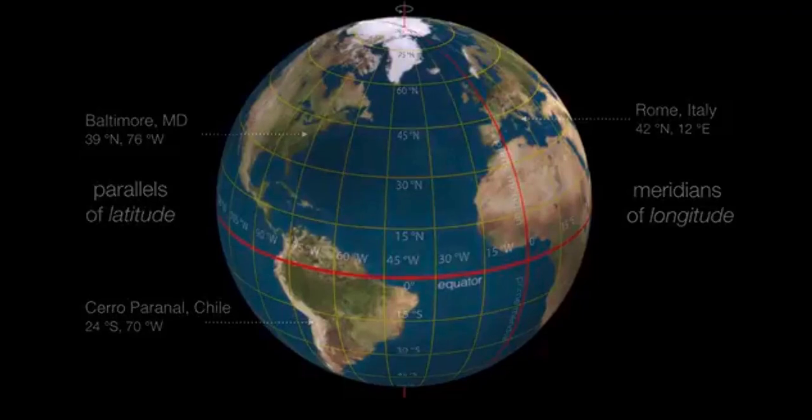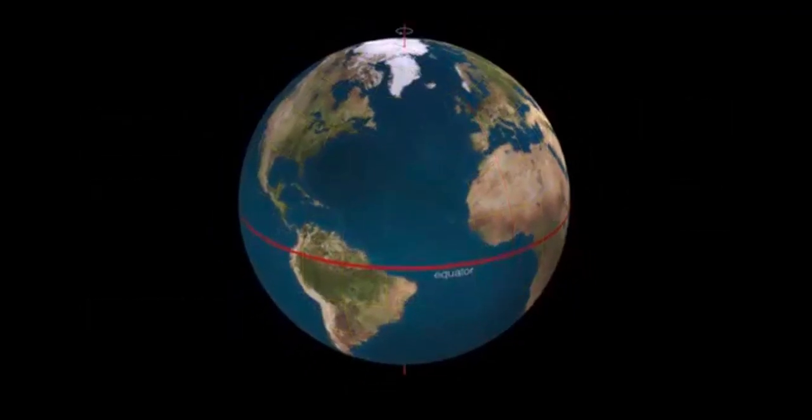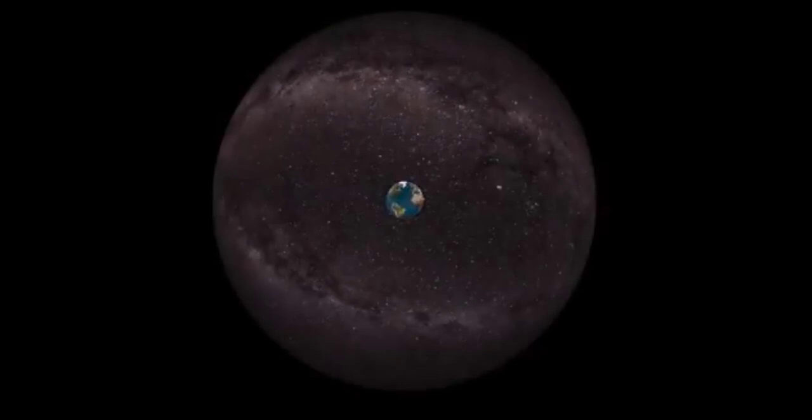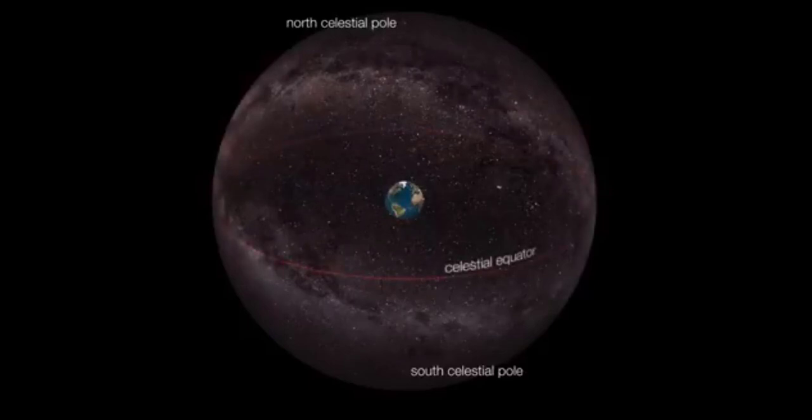Going back to this idea of the celestial sphere, let's start by taking the Earth's poles and projecting them onto the sky, and that gives us the north and south celestial poles. And we'll take the Earth's equator and project that onto the sky, giving us the celestial equator.